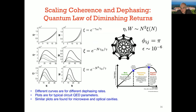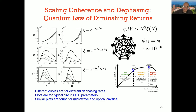Dephasing will still limit progress. If you use more levels or more atoms, even with coherence you get some increase in work or efficiency, but after a certain number of atoms or levels you expose your system more to the environment and lose the benefits of scaling. We call this the quantum law of diminishing returns: there is a critical number of around 10, so you need about 10 qubits or a 10-level system to beat the current state-of-the-art cavities and see the effects predicted by Scully and co-workers.